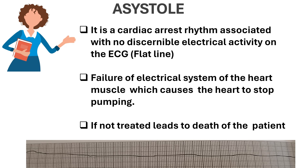We will see what is Asystole. It is a cardiac arrest rhythm associated with non-discernible electrical activity on the ECG. It is a non-shockable cardiac arrest rhythm, so what you can see is a flat line on the ECG. Asystole - the name itself: 'A' means without and 'systole' is contraction. Without contraction, there is no conduction system inside the heart and due to that the heart stops pumping blood. It is a fatal arrhythmia that can lead to death of the patient.